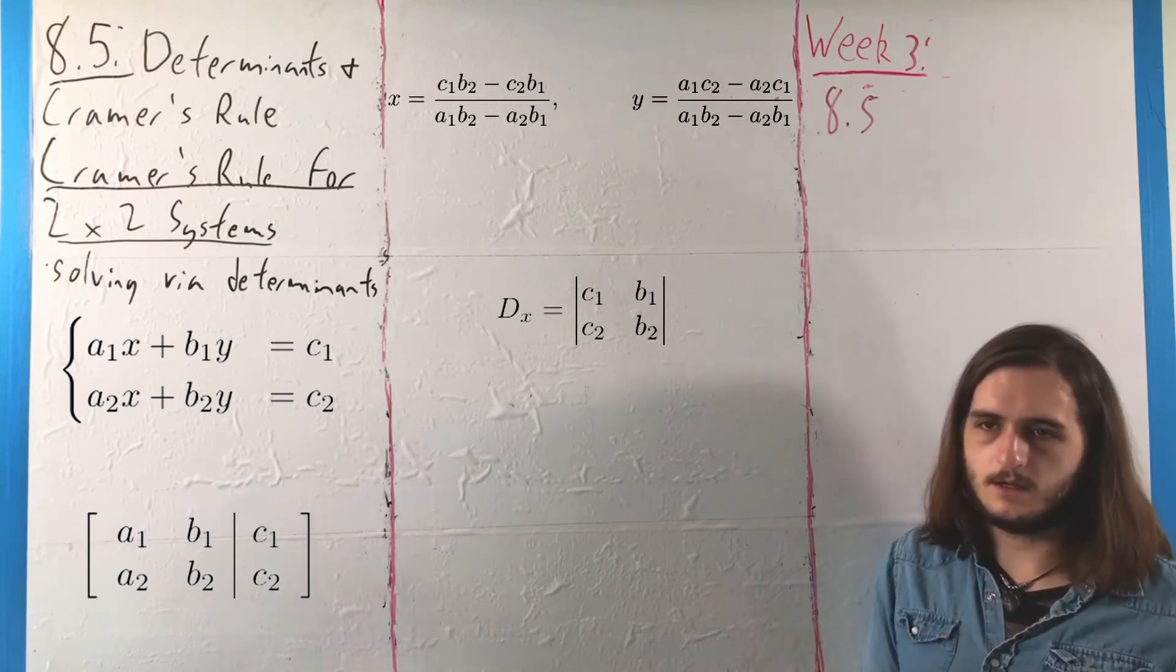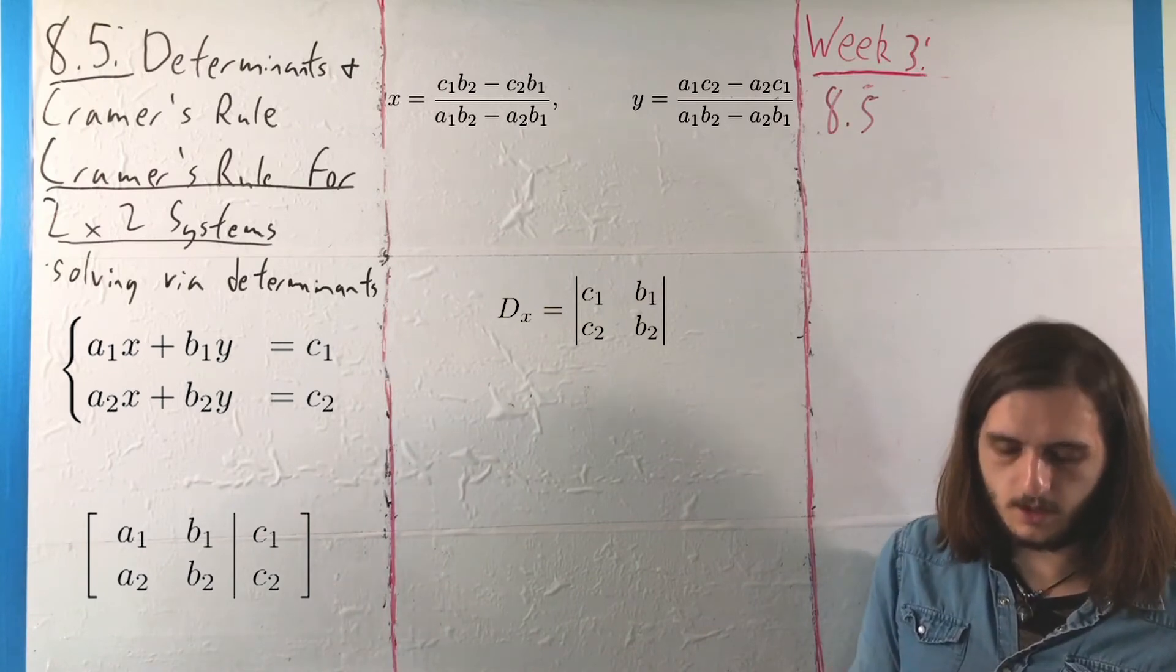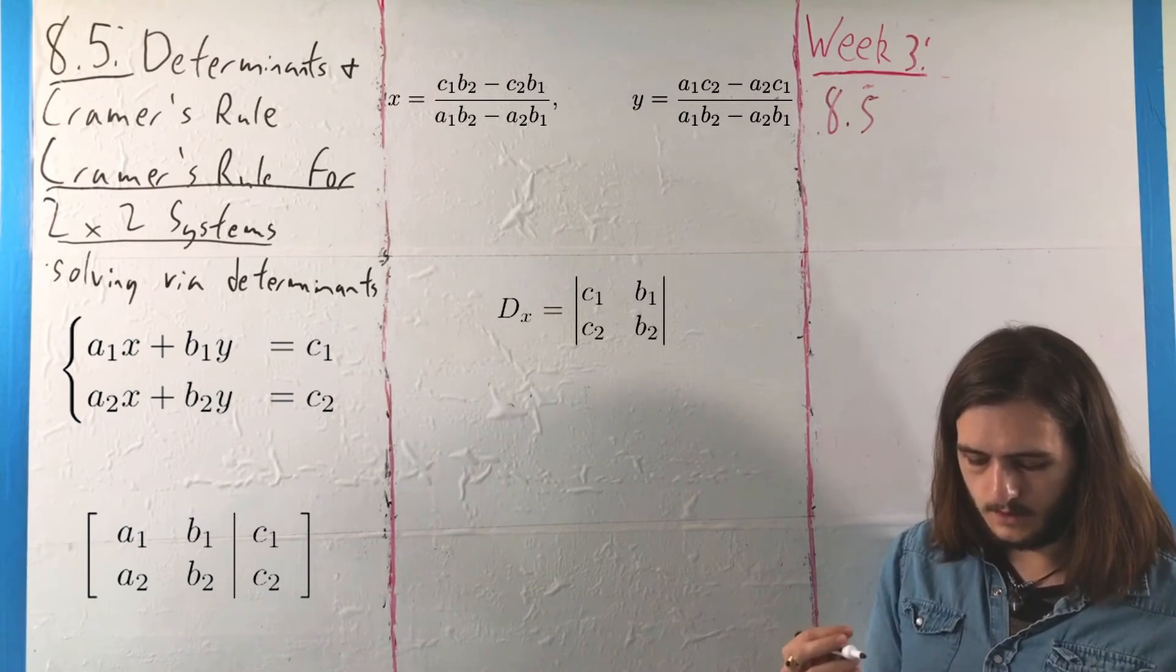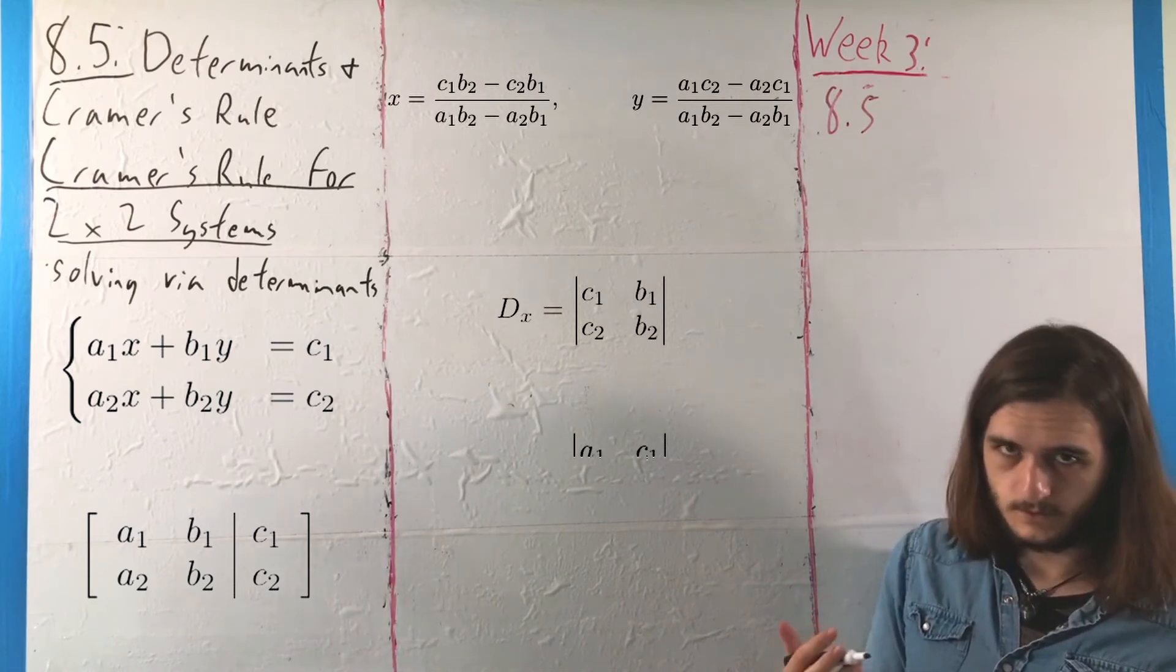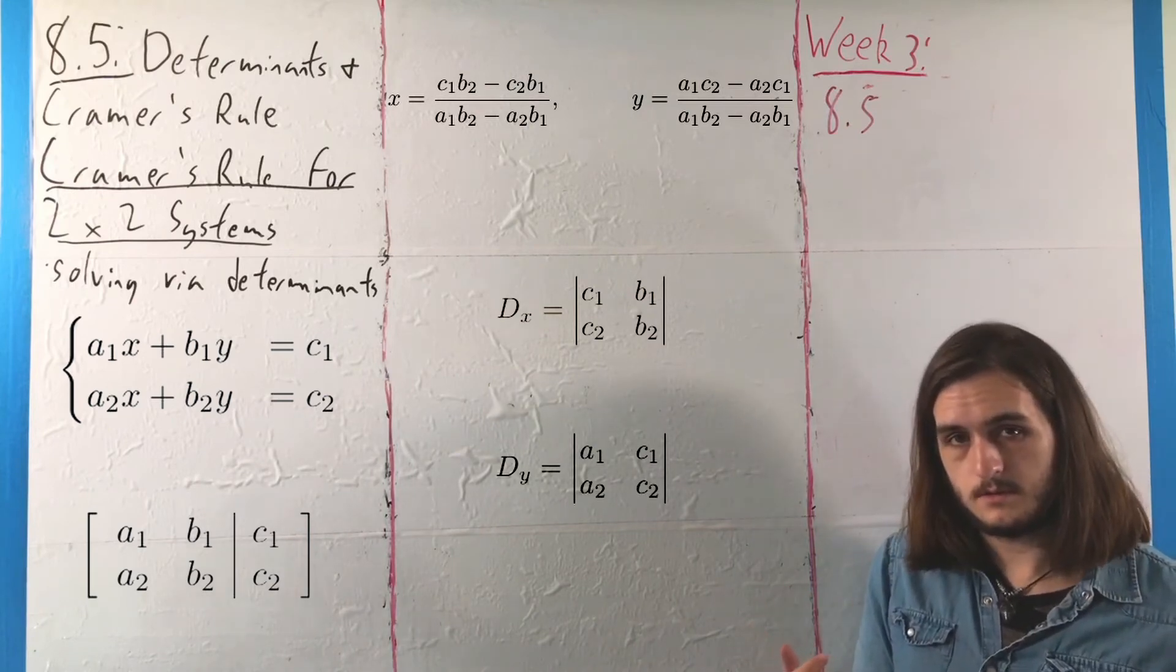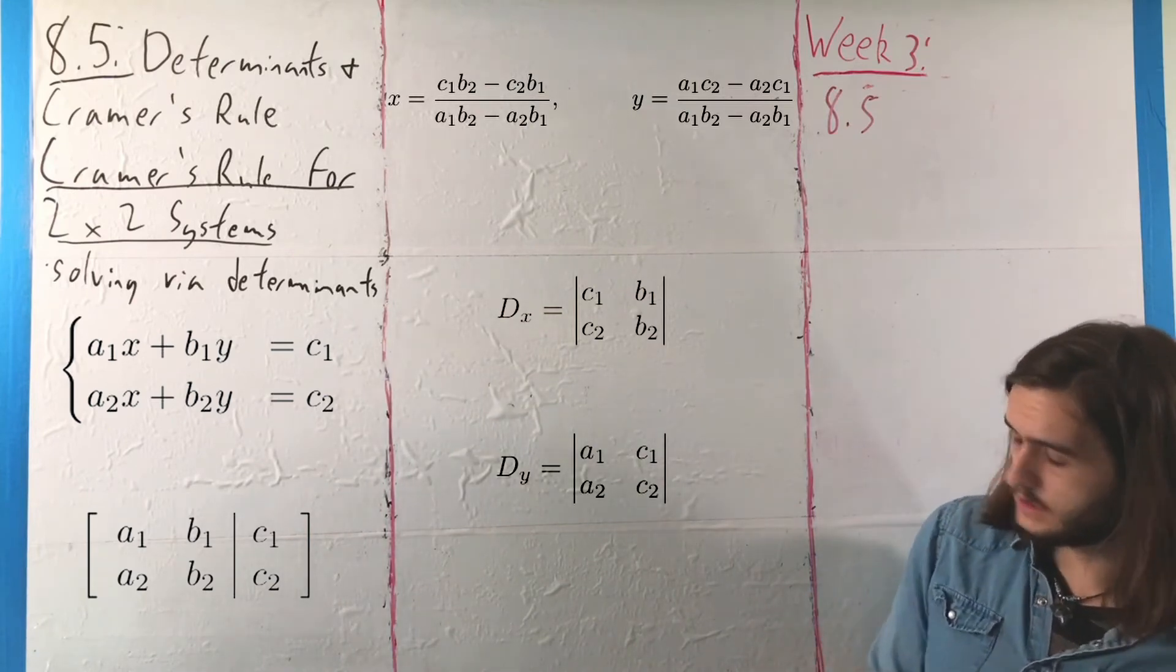While DY can be thought of as the determinant of A1C1A2C2, which would be A1C2 minus A2C1, the numerator for that Y term.